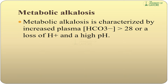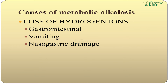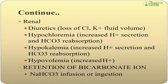Metabolic alkalosis is characterized by increased plasma bicarbonate greater than 28 mEq/L or loss of hydrogen ions, resulting in a high pH. Causes include loss of hydrogen ions via the gastrointestinal route such as vomiting or nasogastric drainage. Renal causes include diuretics, loss of calcium, potassium, fluid volume, hypochloremia, and increased hydrogen secretion with bicarbonate absorption.